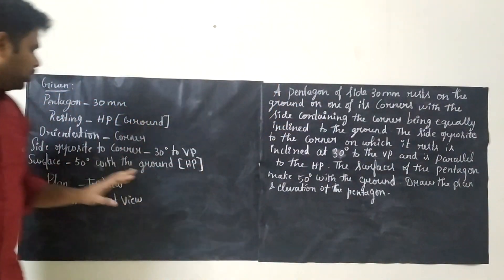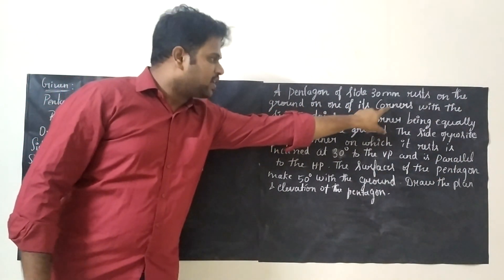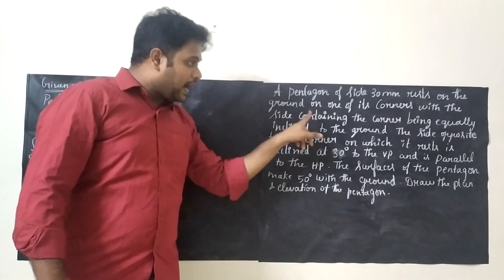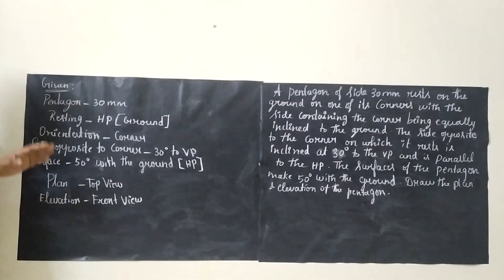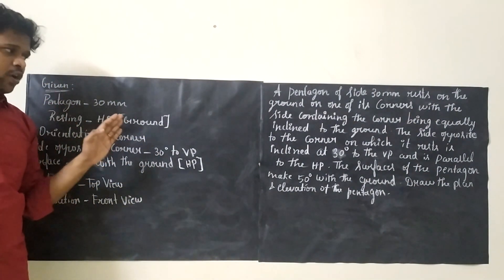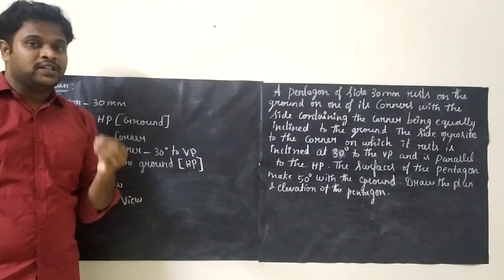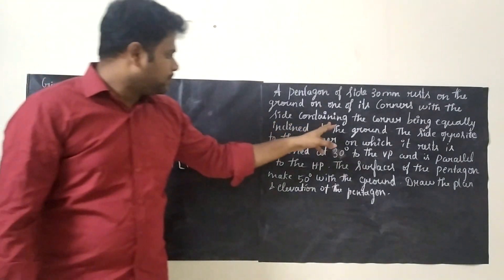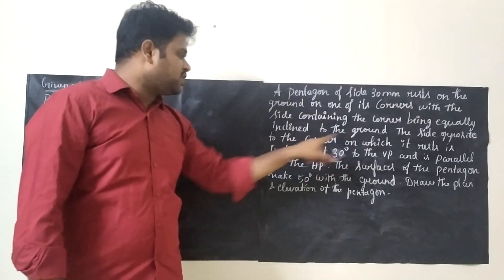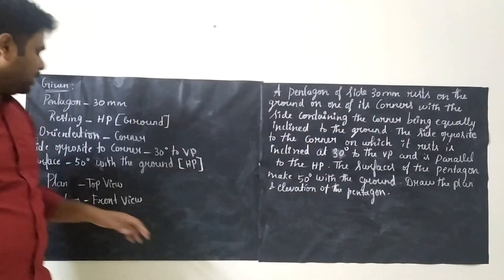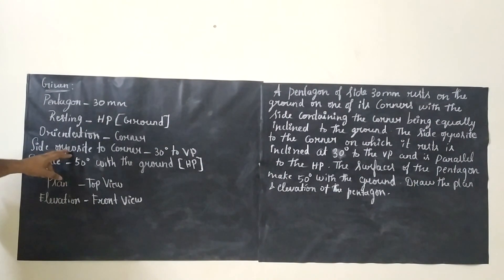One of its corners — so its orientation is a corner orientation. Orientation can be edge or corner; in our case it is corner orientation. The corner should be equally inclined to the ground. The side opposite to the corner on which it rests is inclined at 30 degrees to VP, and it should be parallel to HP.